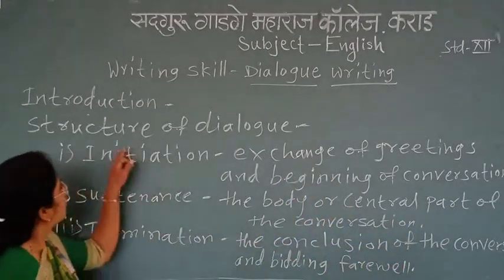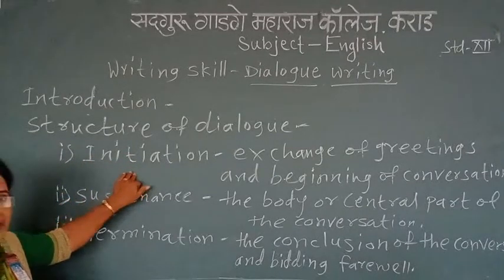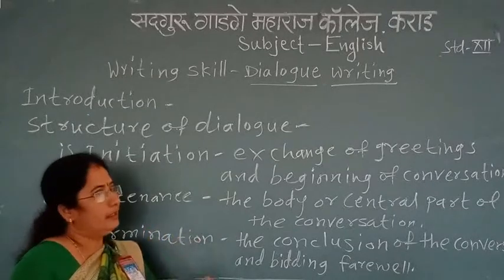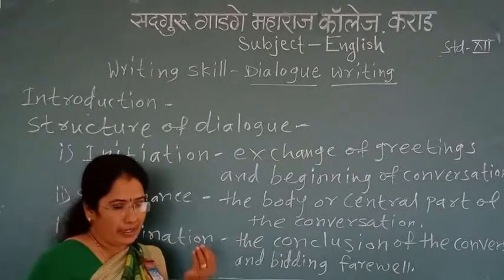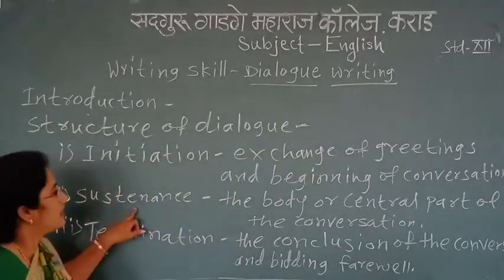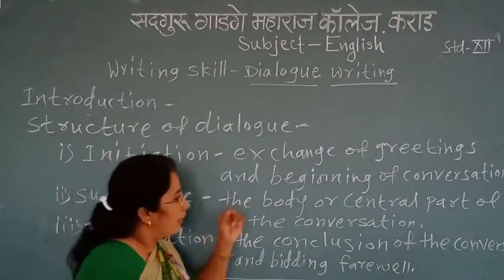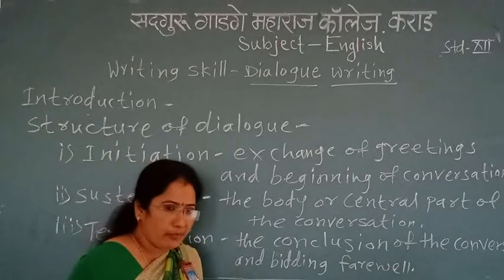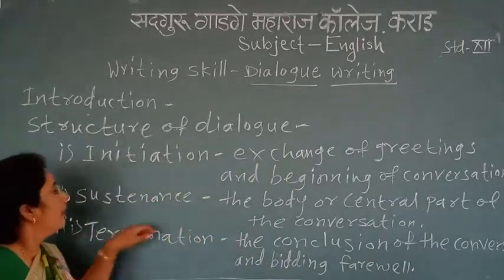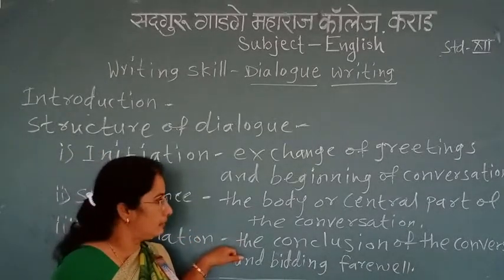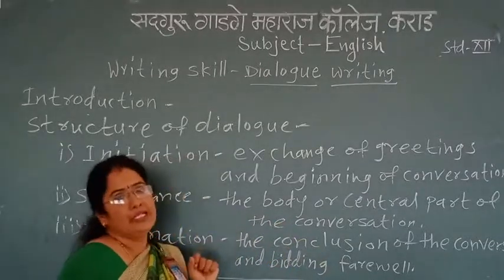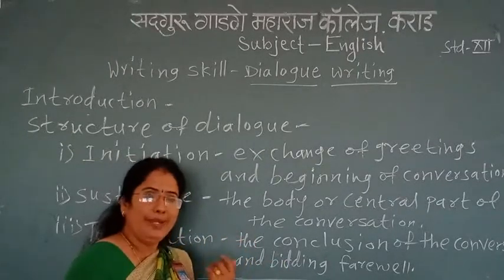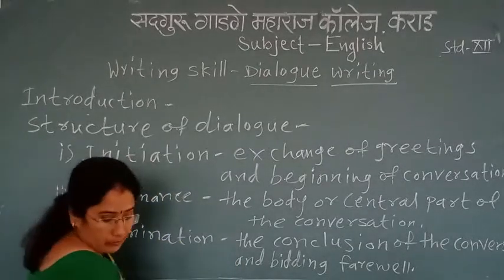Students, the structure of dialogue: the first step is initiation — we exchange greetings, meaning it is the beginning of the conversation; we say hi, hello, good morning, how are you. The second step is sustenance — it is the main body or the central part of the conversation where we discuss the main issue or information. The third step is termination — the last part of the dialogue where we conclude the conversation and bid farewell, such as goodbye, okay, see you soon, thank you, welcome, etc.